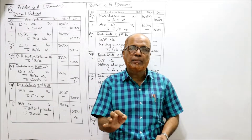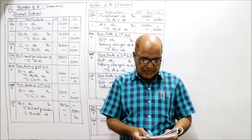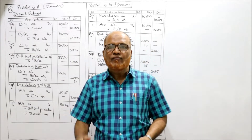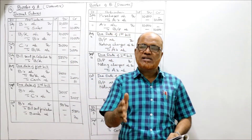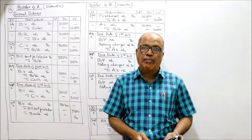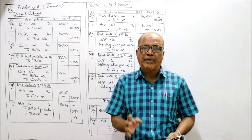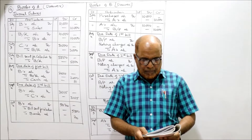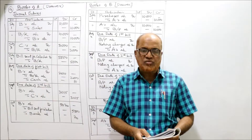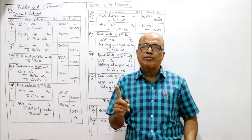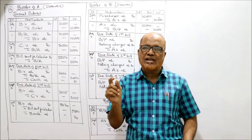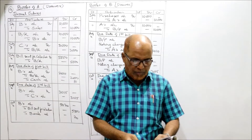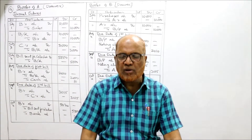On maturity, all the bills were dishonored — first bill dishonored, second bill dishonored, third bill dishonored by B. Noting charges were paid: 10 rupees for the first bill, 15 rupees for the second bill, 20 rupees for the third bill.